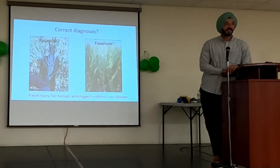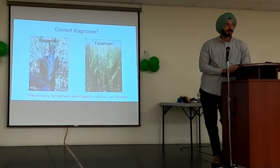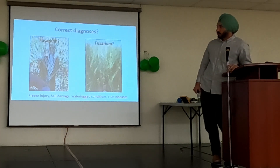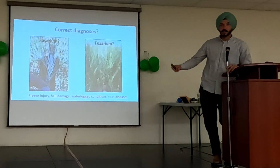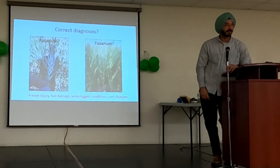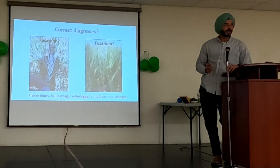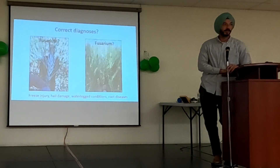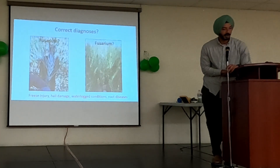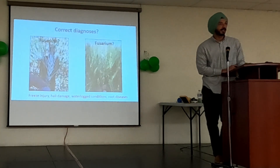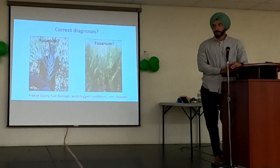Even for diseases we already know, symptoms can be misdiagnosed — for example, hail damage can look very familiar to fusarium head blight. Something like bacterial leaf streak is very new to us, so we should do our homework on disease identification. If it's there, keep good notes and records about what's happening, how much yield loss you have, and avoid using that seed lot for seeding purposes.